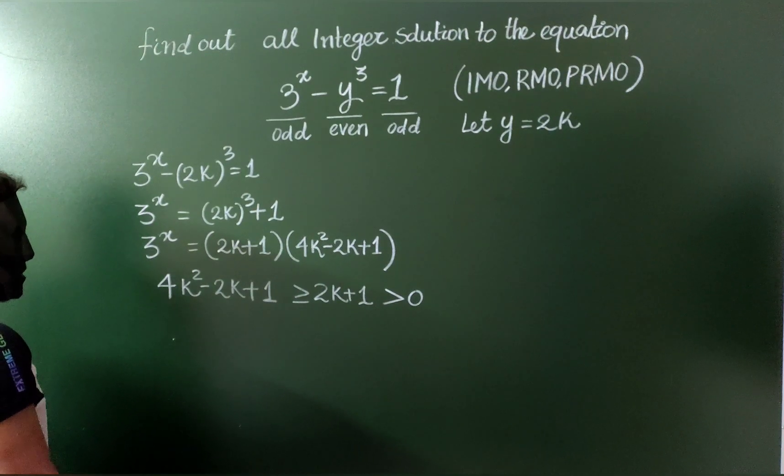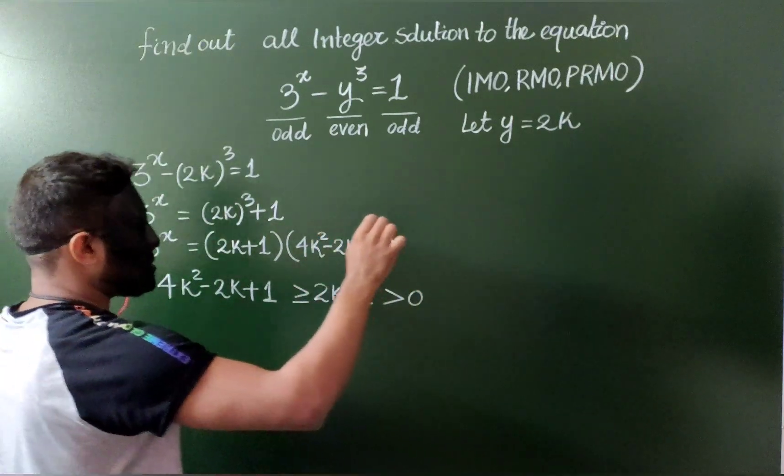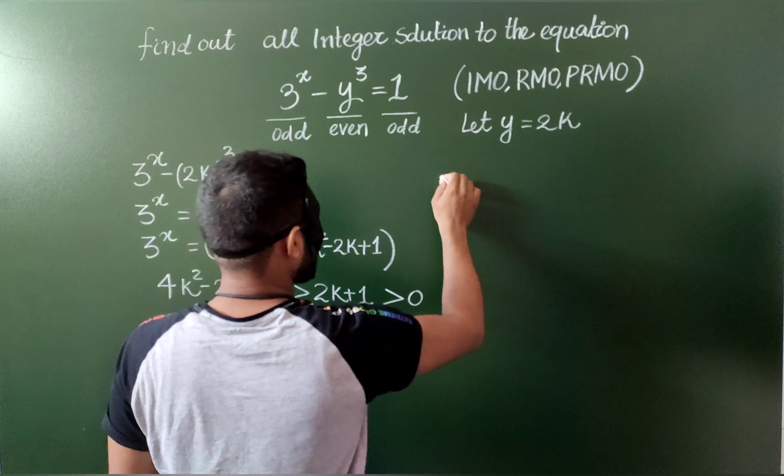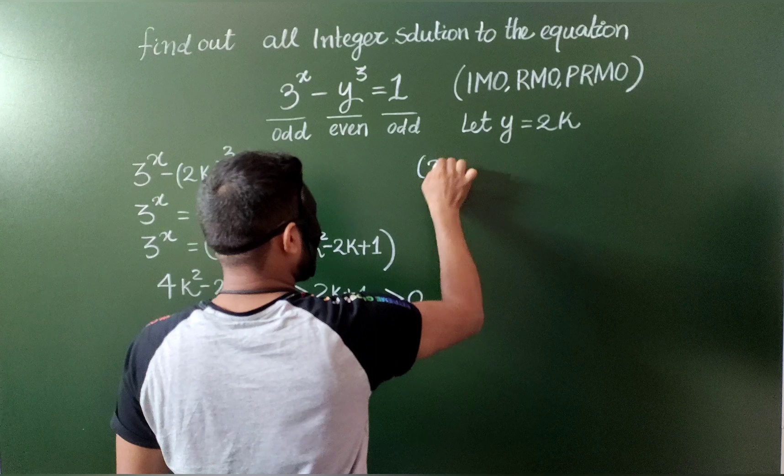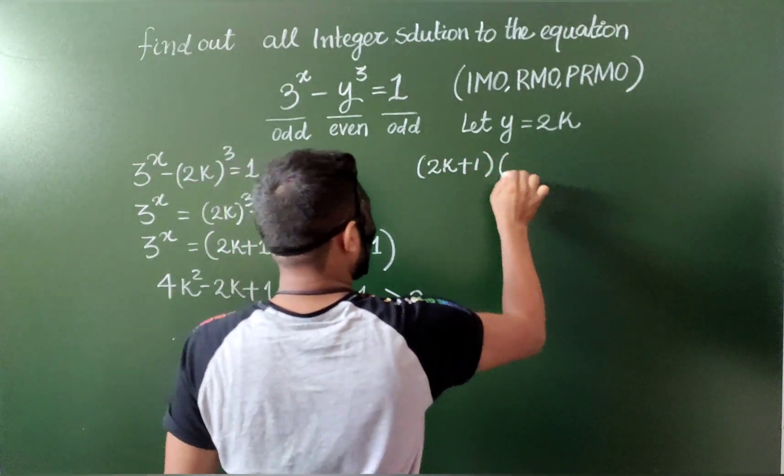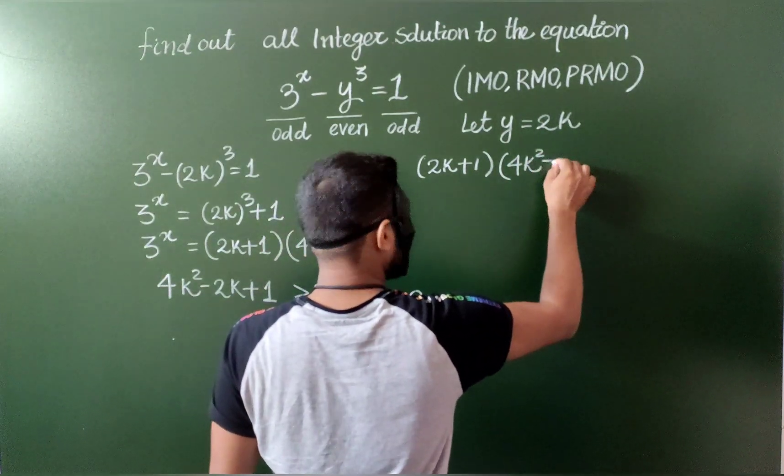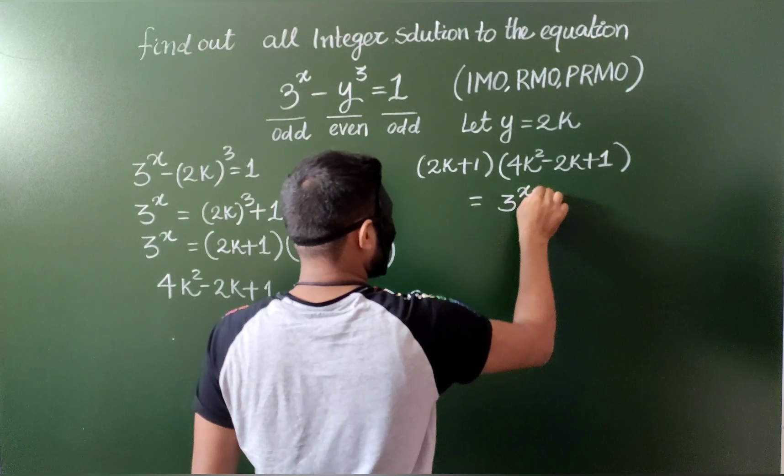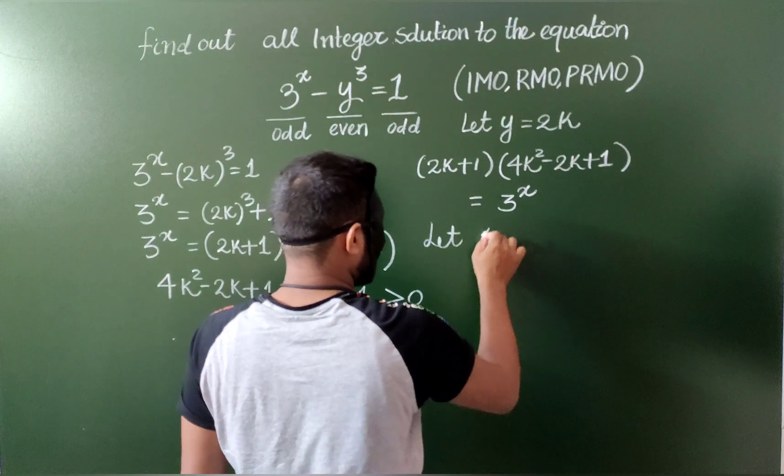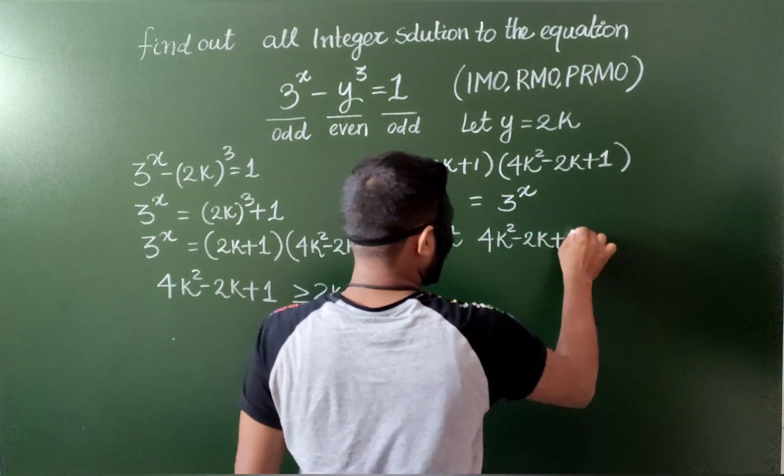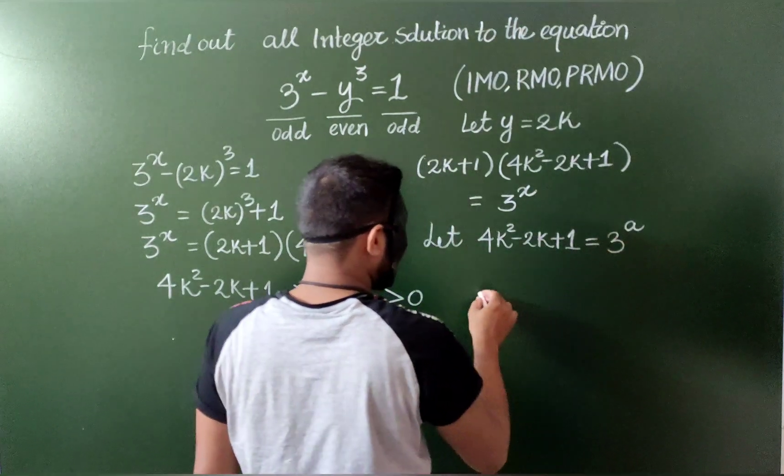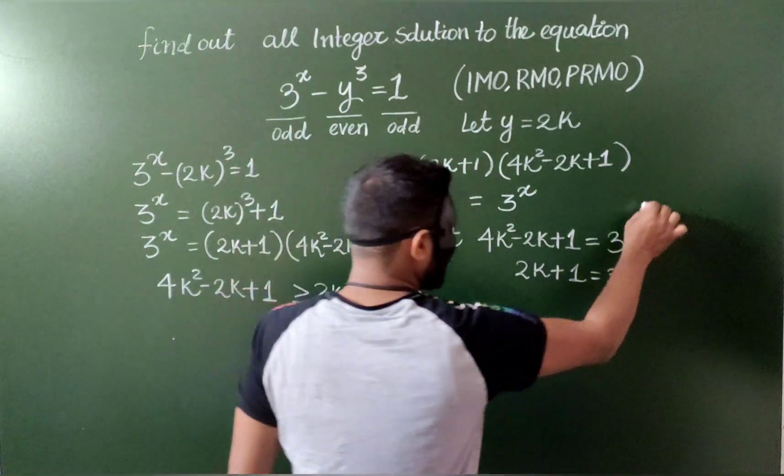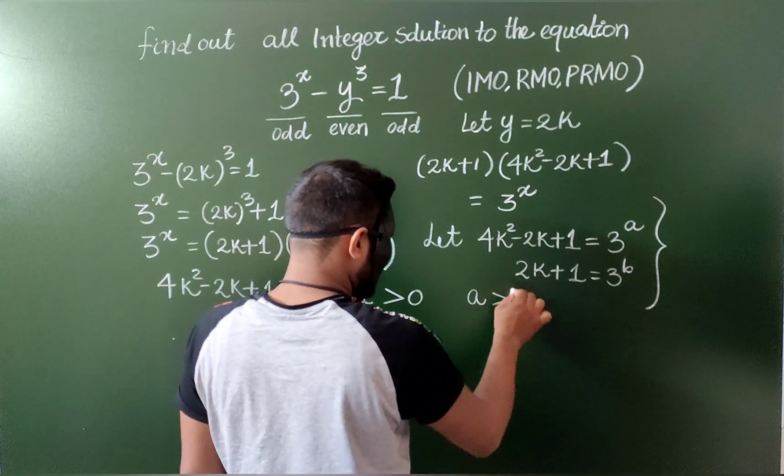Hence I can factorize something like 2k plus 1 and 4k square minus 2k plus 1 is equal to 3 to the power x. Let 4k square minus 2k plus 1 is equal to 3 to the power a, and 2k plus 1 is equal to 3 to the power b. Now here, clearly a is greater than b.